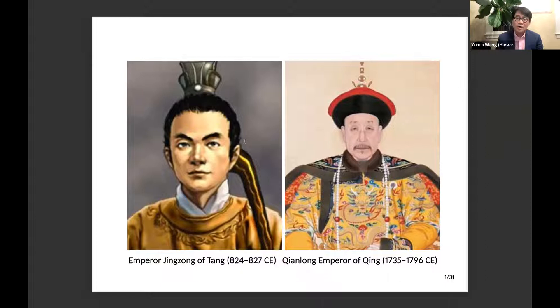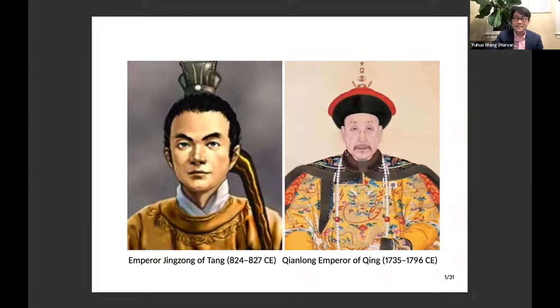If you only know the stories of these two individual emperors, you might think Tang Jingzong must have lived in a violent and chaotic era, while Qianlong's long reign suggests a rich and peaceful dynasty. But if you know something about Chinese history, you know the fate of the dynasties they were ruling was exactly the opposite of the fate of these two individual emperors.